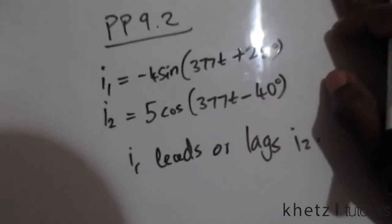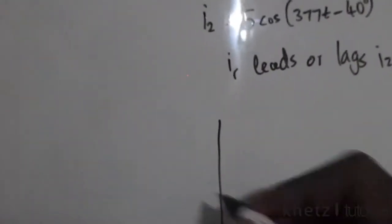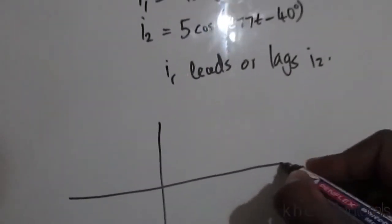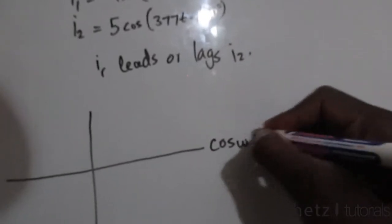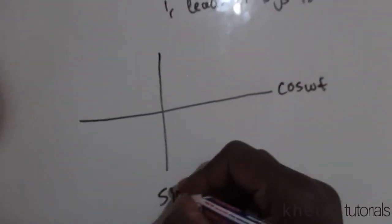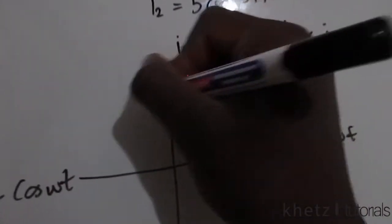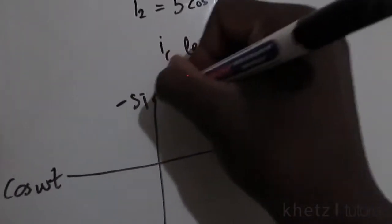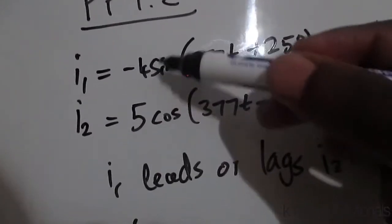The first way is to use the diagram which is suggested in the textbook. So here you have your cos ωt, here you have your sine ωt, you're going to have your negative cos ωt, and here you have your negative sine ωt. Now if you look at the number which comes before the sinusoid, this one it's negative.